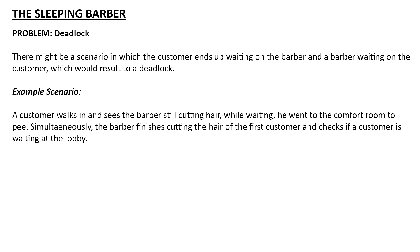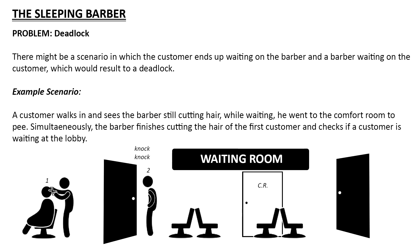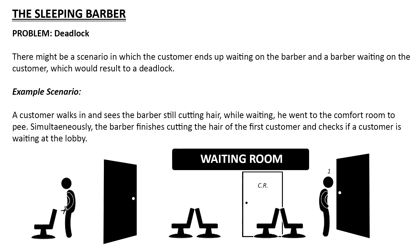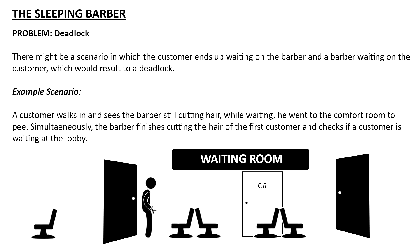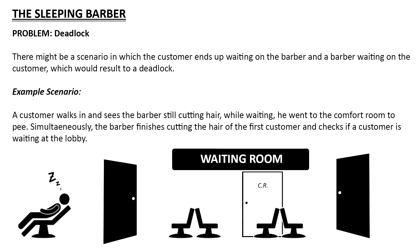Here is a sample scenario for the deadlock. A customer walks in and sees the barber still cutting hair. While waiting, he went to the comfort room. Simultaneously, the barber finishes cutting the hair of the first customer and checks if a customer is waiting at the lobby. Since no one is at the lobby, the barber decided to go back to the chair and sleep. Unbeknownst to the second customer, the first customer already left. Thus, he kept on waiting in the waiting room. And this is how a deadlock may occur in the sleeping barber problem.